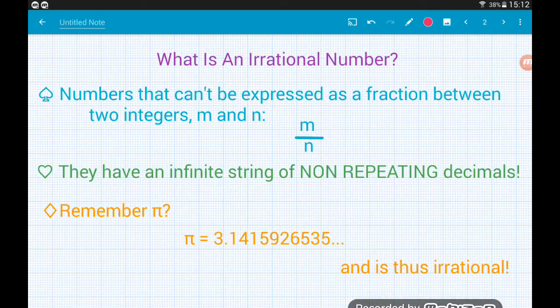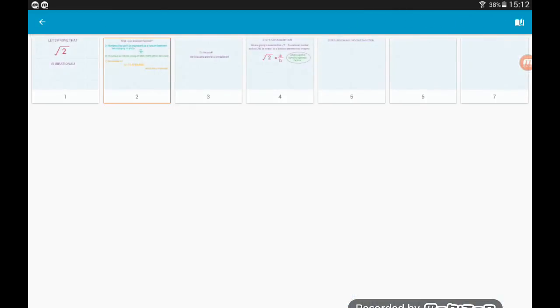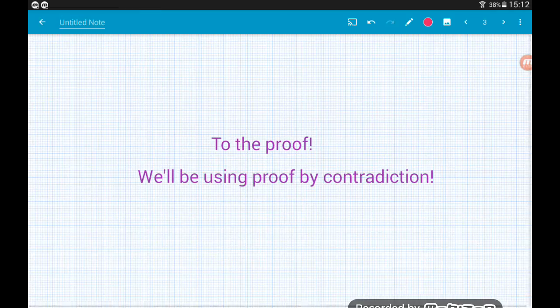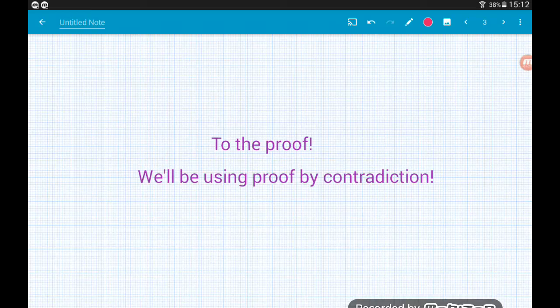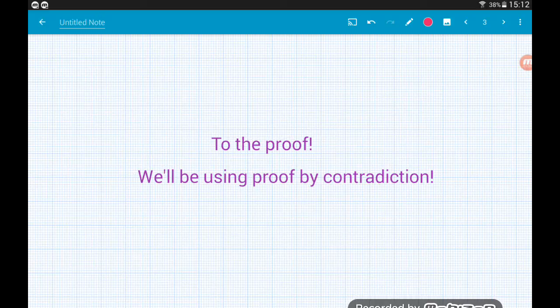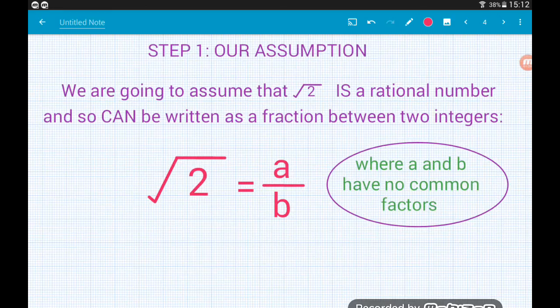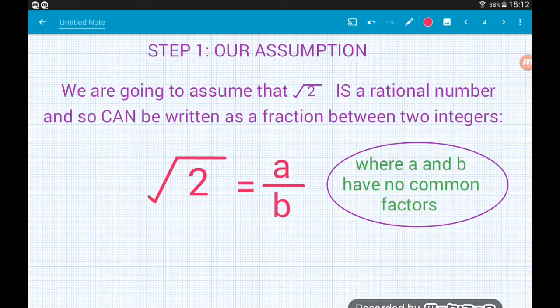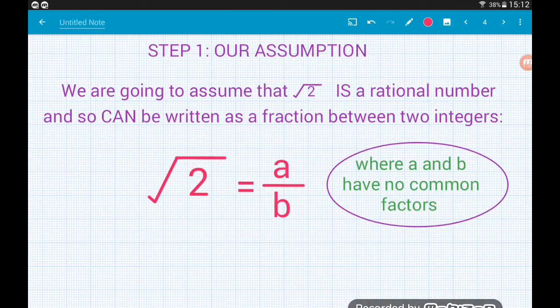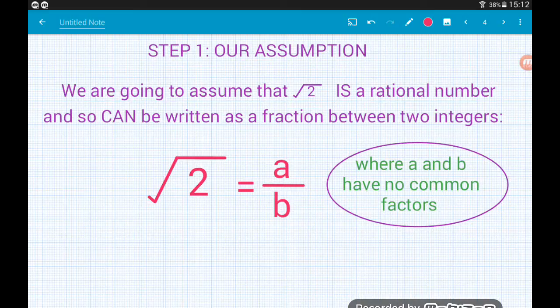Let's have a look then at proving that root 2 is an irrational number. So we're going to use proof by contradiction. It's not particularly difficult. Now when you're doing proof by contradiction, you first of all assume the opposite of what you're trying to prove. So we're going to assume that root 2 actually is a rational number.